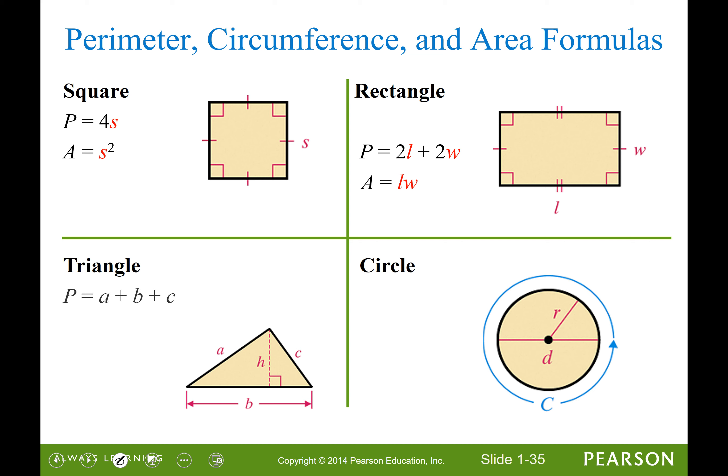For a triangle, if you wrote the perimeter equals a plus b plus c, you are correct. And if you wrote one half the length of the base times the length of the height for the area, you got that right. For the circle, circumference equals 2 pi r. If you put pi d, that's fine too, because two times r is the diameter. And if for area, you wrote pi r squared, then you got that right as well.